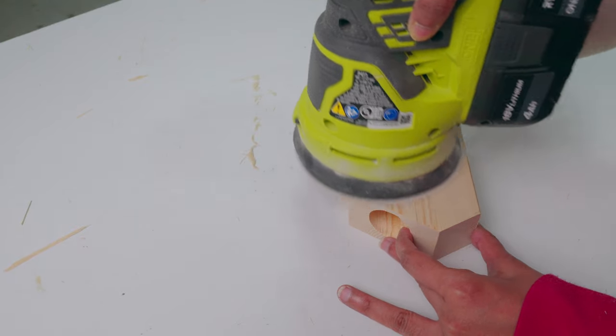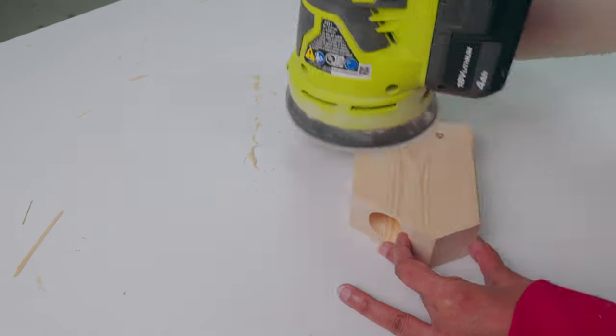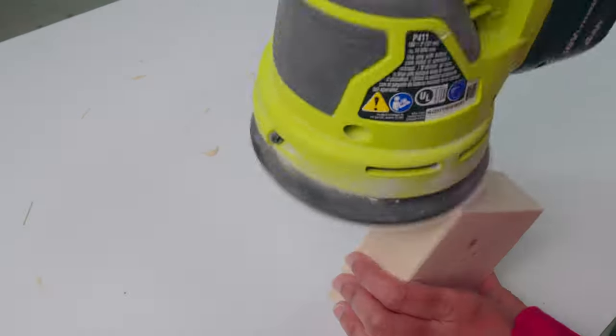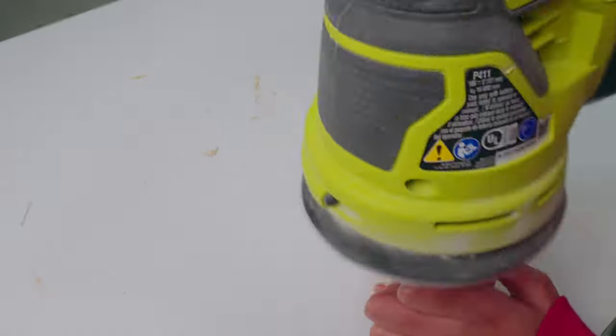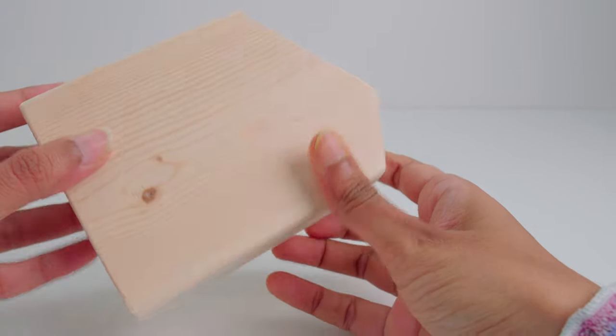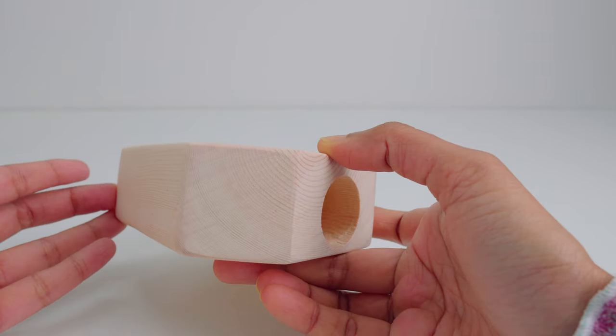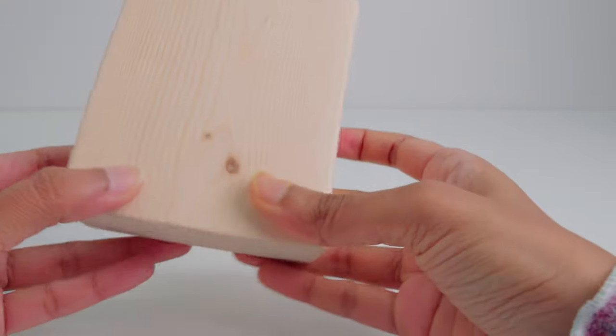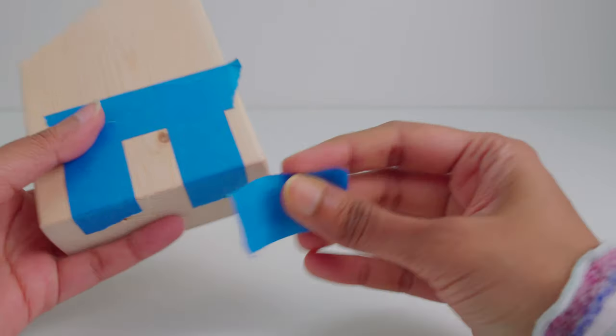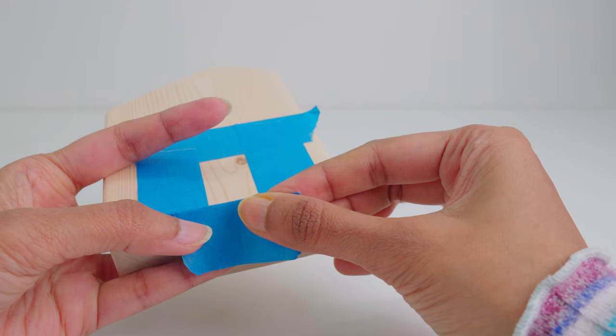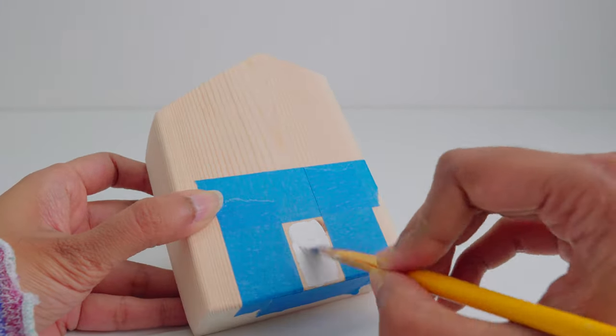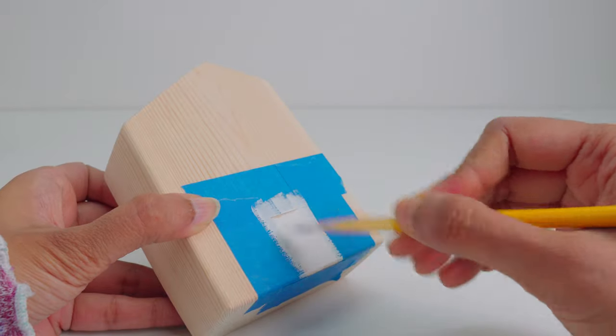Sand all the sides to make them smooth and round. Paint anything you want on the wood house to personalize it. I painted little doors on them and finished with a clear polyacrylic sealer.